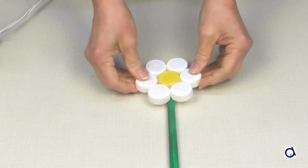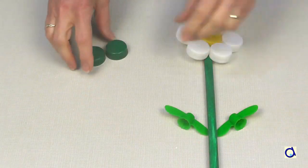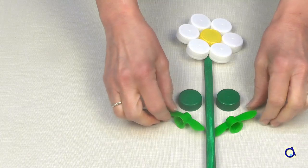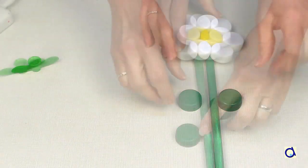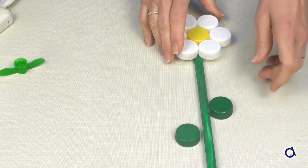Glue the flower on top of the stem with hot glue. For leaves, you can choose round green caps or other shapes. Glue the green caps you have chosen for the leaves on the side of the stem.